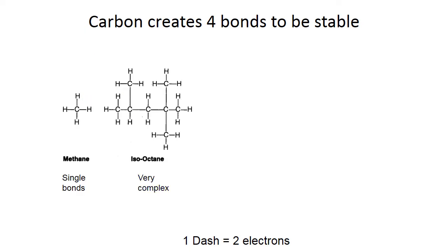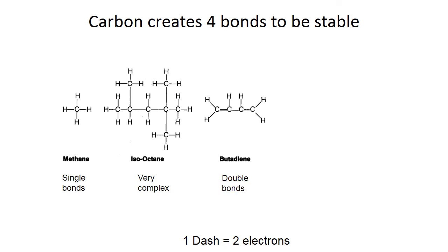In a more complex carbon-based molecule, pick any carbon — notice how there are four dashes coming off of it, representing eight electrons, so all carbons are stable. You may also see double dashes that look almost like an equal sign — these are called double bonds, sharing two sets of electrons. Pick the carbon on the far right: four dashes attached equals eight electrons. This carbon and all the others are stable.